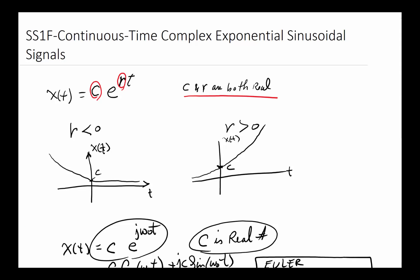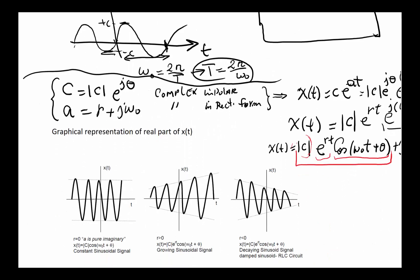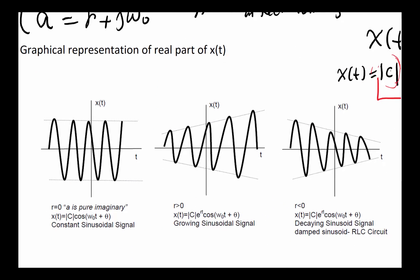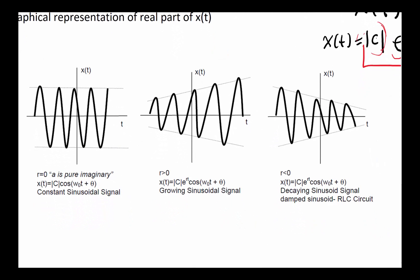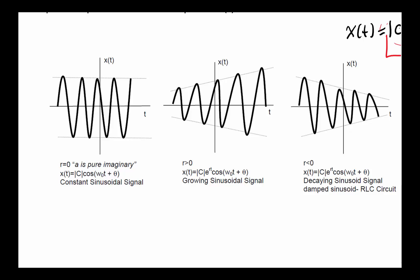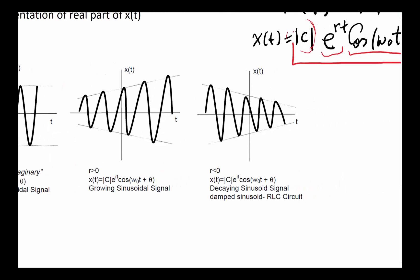This has a little bit of everything. If r equals 0, you just have a constant times a cosine, so a simple sinusoidal. If r > 0, you have a sinusoidal that's growing over time. And if r < 0, you have a sinusoidal that's shrinking over time exponentially.